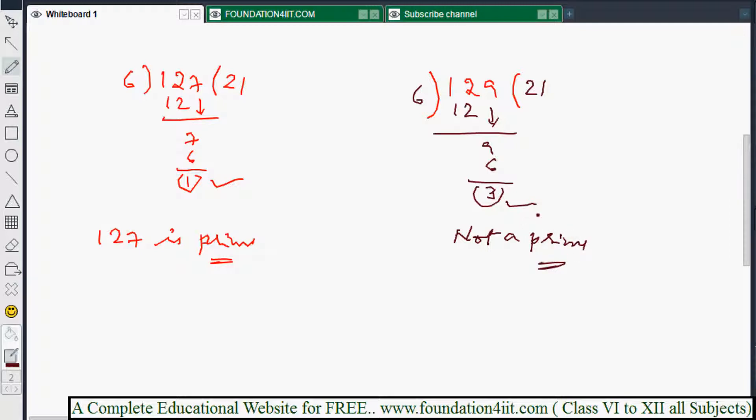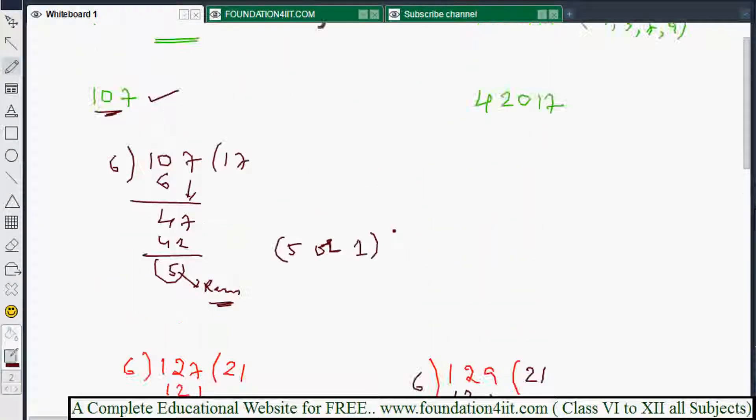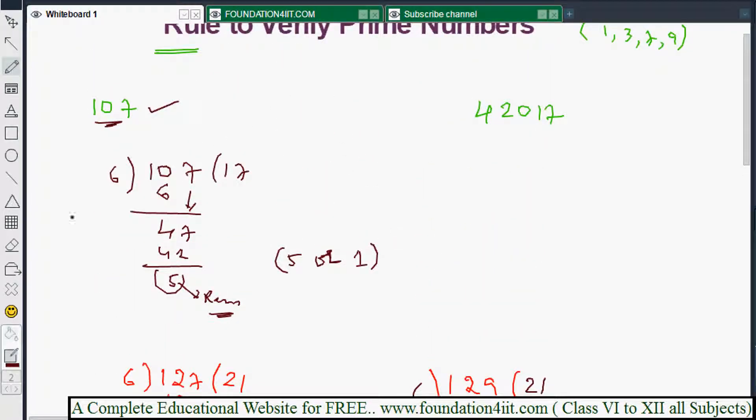You can take a large number also. For this example: 42,017. If you do division of 42,017 with 6, whatever remainder you get, if it is 1 or 5, then there is a prime number. Otherwise it is not a prime number.